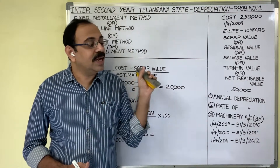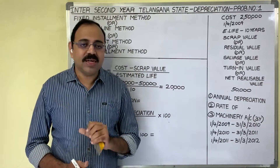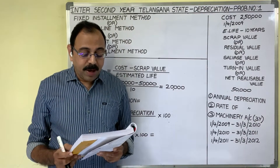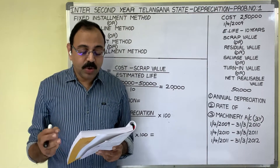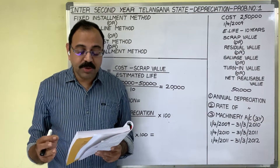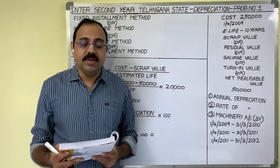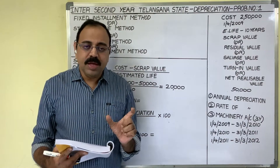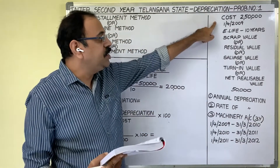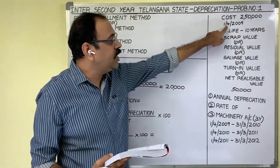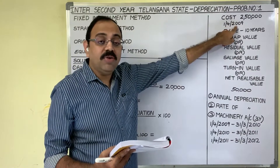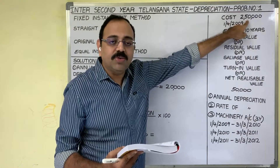Then only you can understand the present video. Let us start the problem. Sri Sai & Co purchased a machine for Rs. 2,50,000 on 1st April 2009. So there is one firm — they purchased a fixed asset, a machine, on 1st April 2009. The cost of the asset is Rs. 2,50,000.